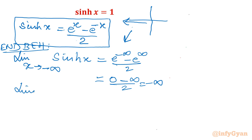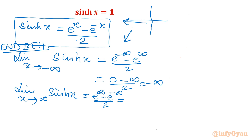Now for the limit as x tends to positive infinity: (e^∞ - e^(-∞)) / 2. Since e^∞ is infinite and e^(-∞) is 0, the overall value is positive infinity. That means as we tend towards positive infinity on the x-axis, the graph moves towards positive infinity as well.